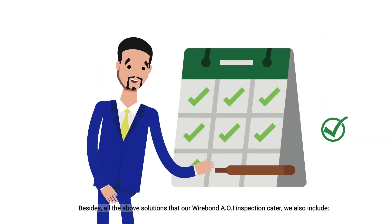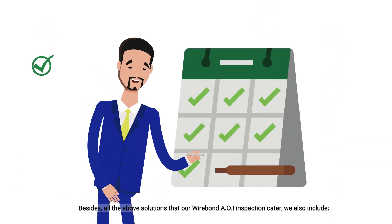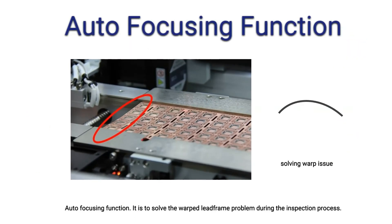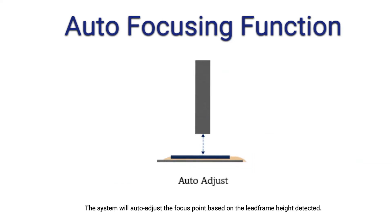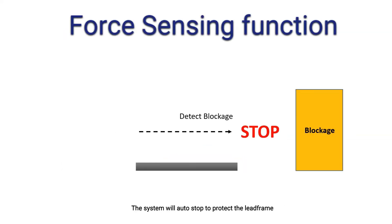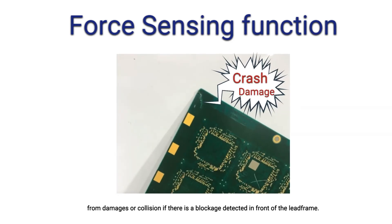Besides all the above solutions that our wire bond AOI inspection caters to, we also include an auto focusing function to solve the warped lead frame problem during the inspection process — the system will auto-adjust the focus point based on the lead frame height detected. We also have a force sensing function where the system will auto-stop to protect the lead frame from damage or collision if a blockage is detected in front of the lead frame.